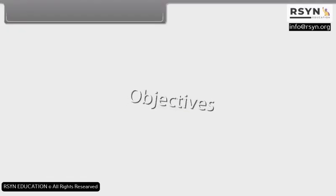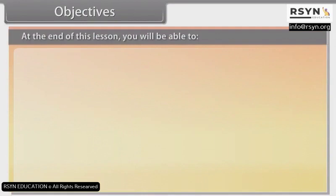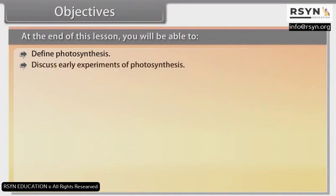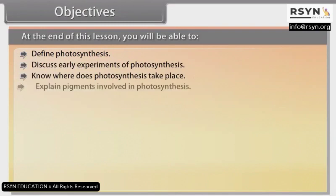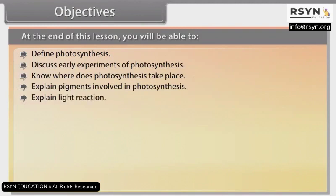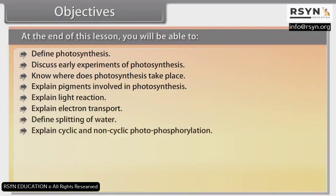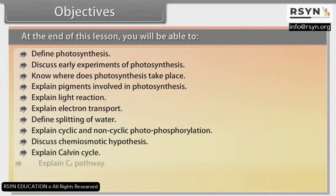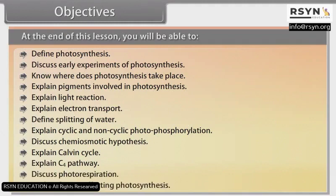At the end of this lesson, you will be able to: define photosynthesis, discuss early experiments of photosynthesis, know where photosynthesis takes place, explain pigments involved in photosynthesis, explain light reaction, explain electron transport, define splitting of water, explain cyclic and non-cyclic photophosphorylation, discuss the chemiosmotic hypothesis, explain the Calvin cycle, explain the C4 pathway, discuss photorespiration, and explain factors affecting photosynthesis.